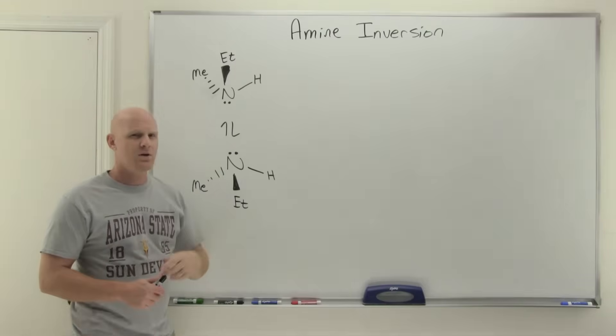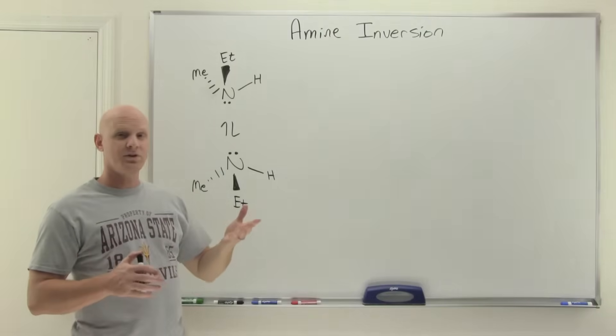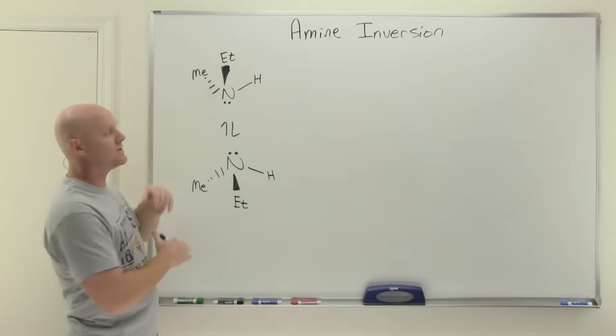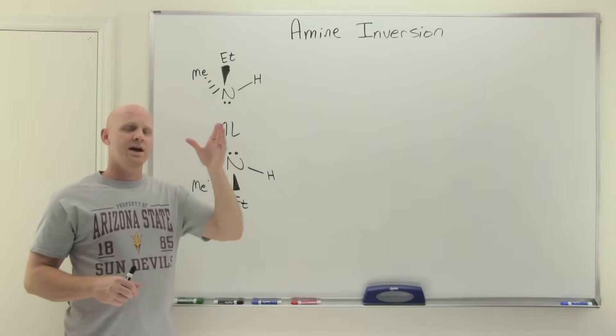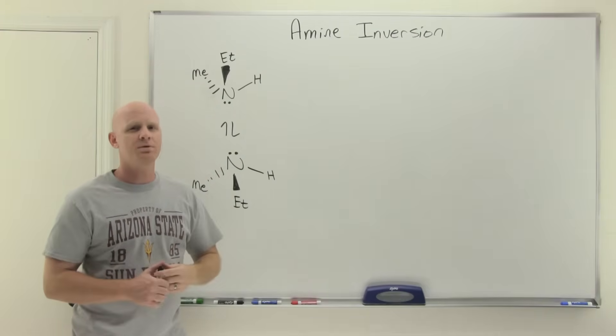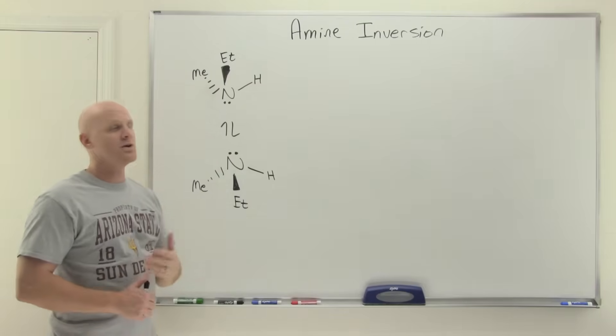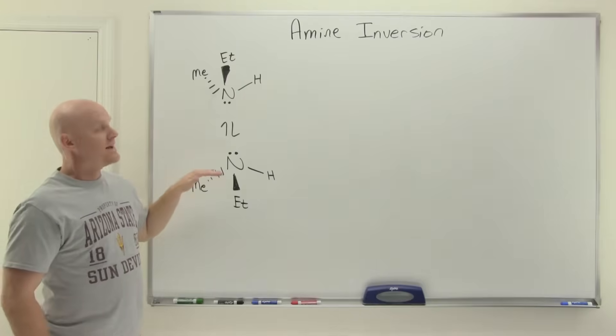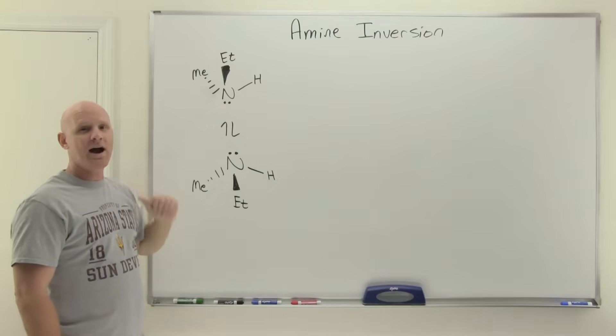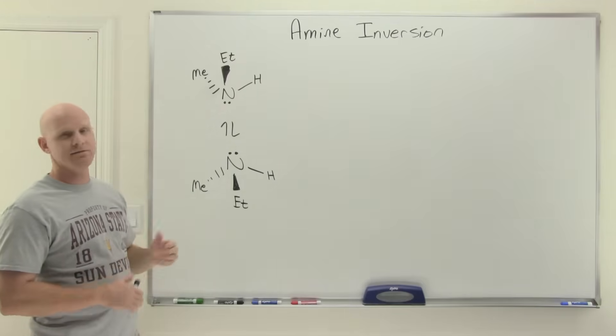And so it turns out you can't have one of these enantiomers without the other one. And so they went through and defined the word chiral a little bit different to take this into account. They said chiral is when a molecule and its mirror image are non-superimposable and can't readily be interconverted between each other. So in this case, these are not defined as chiral due to this process of amine inversion.